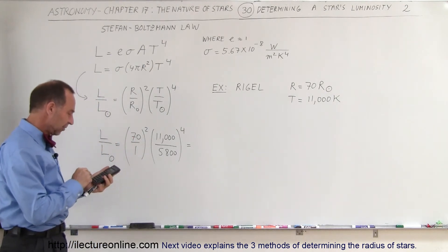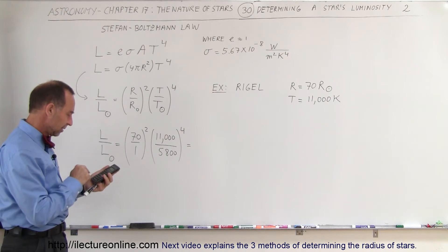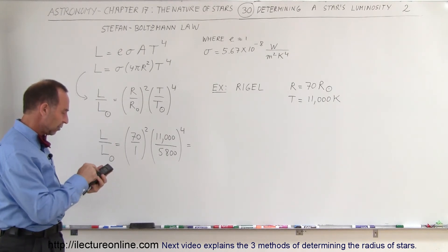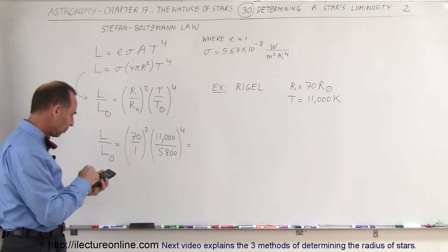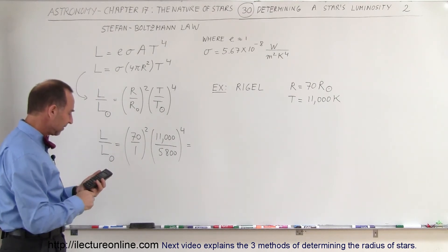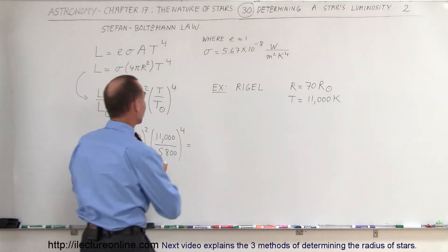So we take 11,000 divided by 5,800, raise that to the fourth power, and then multiply that times 70 squared. We get 63,400, so that's about 63,000.